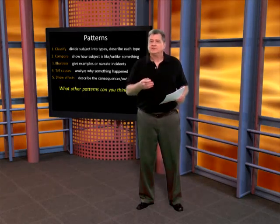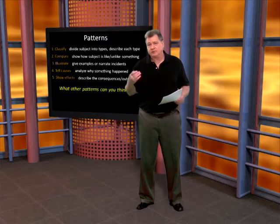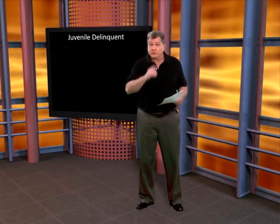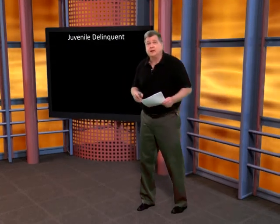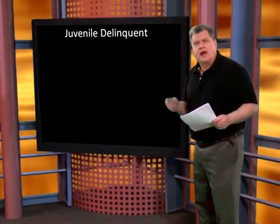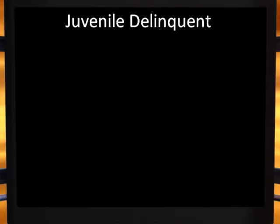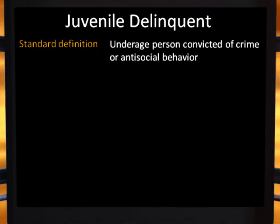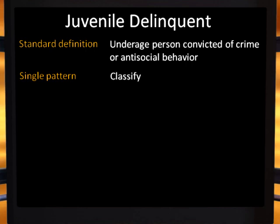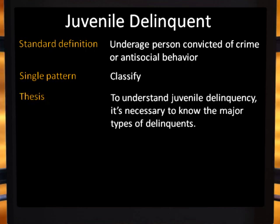Let's take a look at some example outlines based upon some of these patterns. The first one bases its essay on a single pattern. Our term is juvenile delinquent. Its standard definition: an underage person who has committed a crime. Pattern: classify. Thesis: to understand juvenile delinquency, it's necessary to know the major types of delinquents.